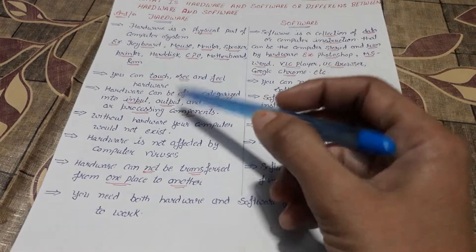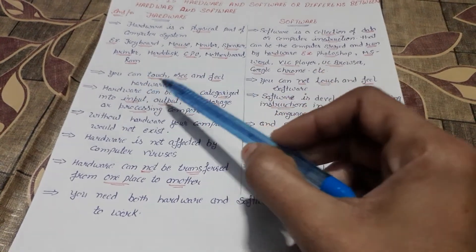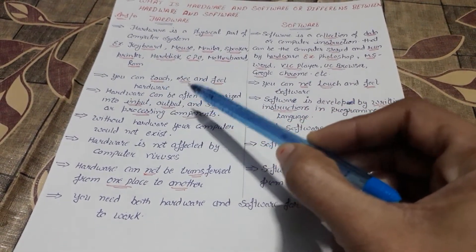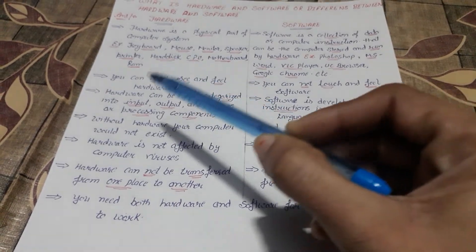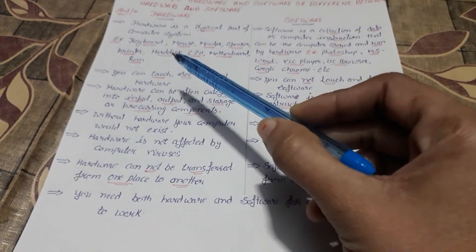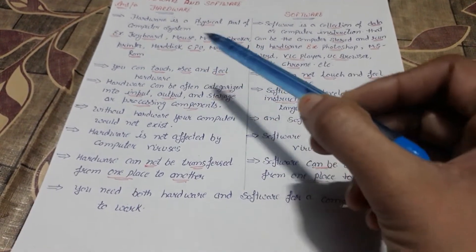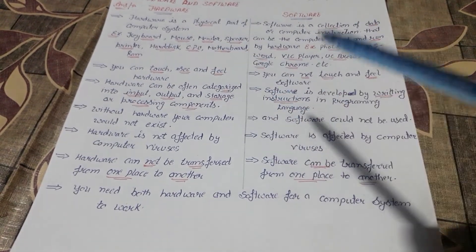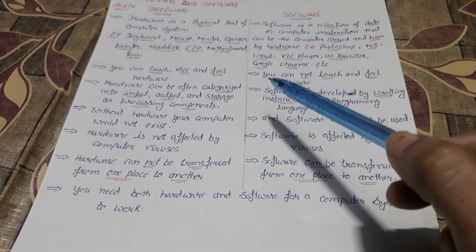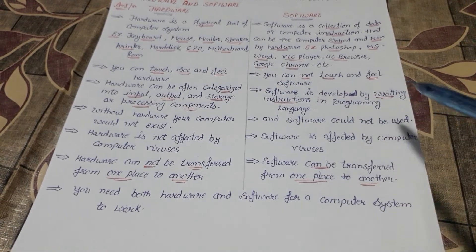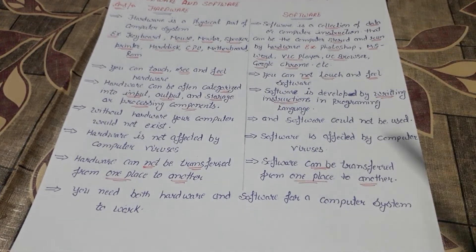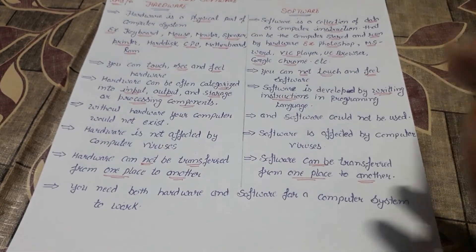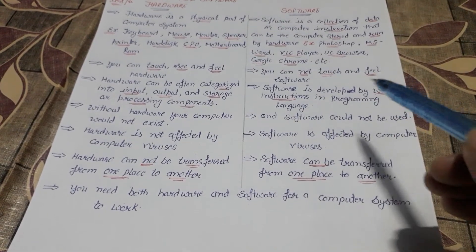Hardware you can touch, see, and feel. For example, keyboard and mouse — you can touch and feel them. Software, on the other hand, cannot be touched or felt.